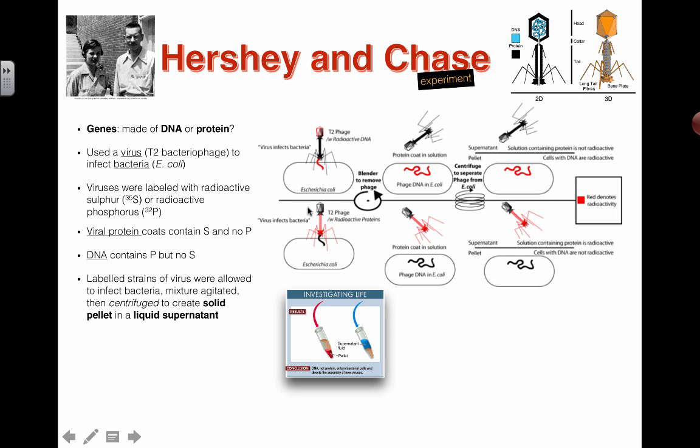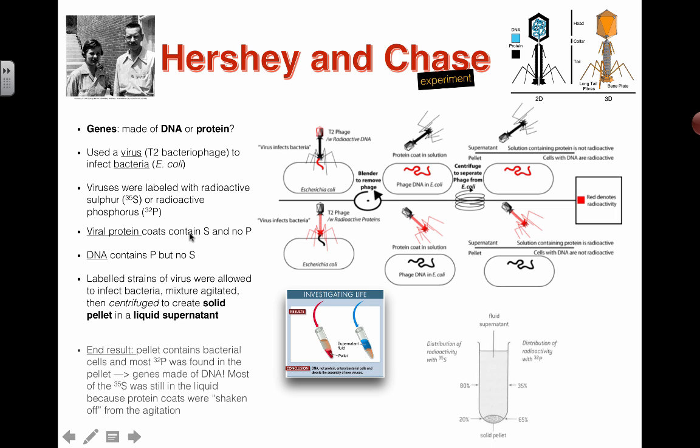But the reality is that this stuff is all super small and tiny. We can't actually visually see if there's glowing phosphorus or glowing sulfur or these radioisotopes. So the results ended up looking something like this. This 65% showing up in the pellet is the key here.